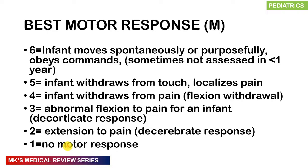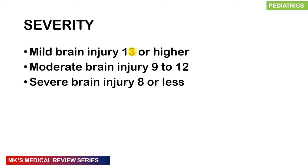Regarding severity of brain injury: a score of 13 or higher indicates mild brain injury, scores of 9 to 12 indicate moderate injury, and anything 8 and below indicates severe injury. A child scoring 8 or below will obviously be unconscious.